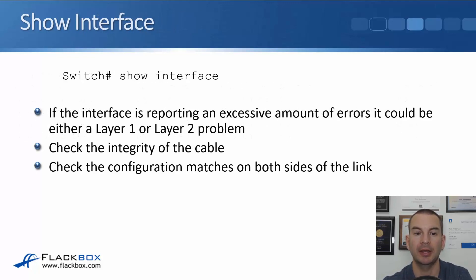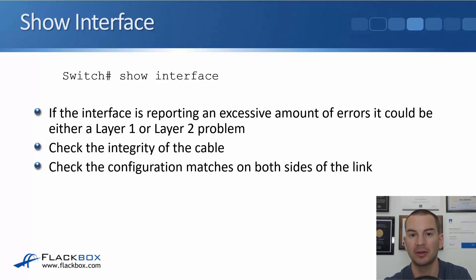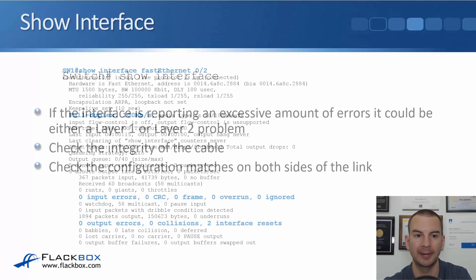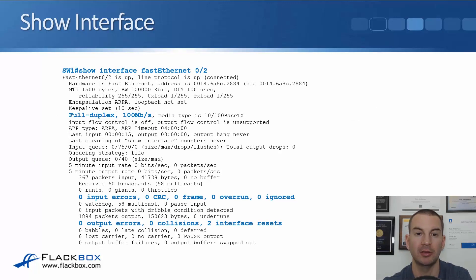The next command is show interface. If the interface is reporting an excessive number of errors, it could be either a layer 1 or a layer 2 problem. Check the integrity of the cable and check that your administrative configuration matches on both sides of the link.